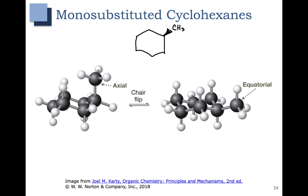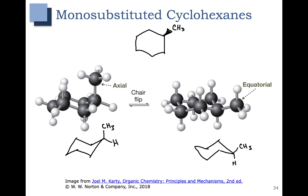In one of the conformations, that methyl group is in the axial position. In the other conformation, the methyl group is in an equatorial position. Let's draw out these two chair conformations. In this first conformation, you can see that the methyl group is up and axial, and in the second one, you can see that that methyl group is up and equatorial. I added in the hydrogens here for clarity, but those are not required.